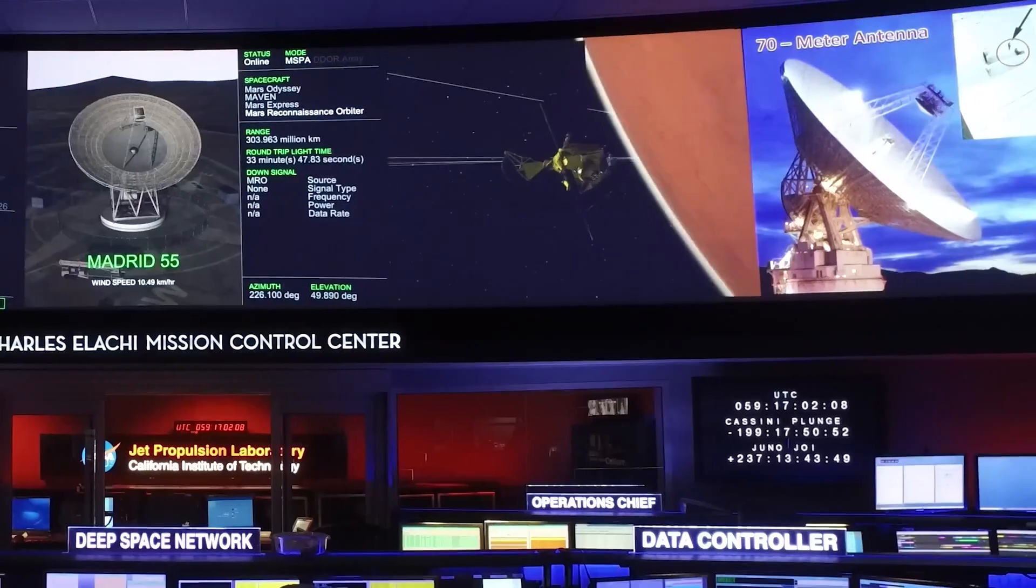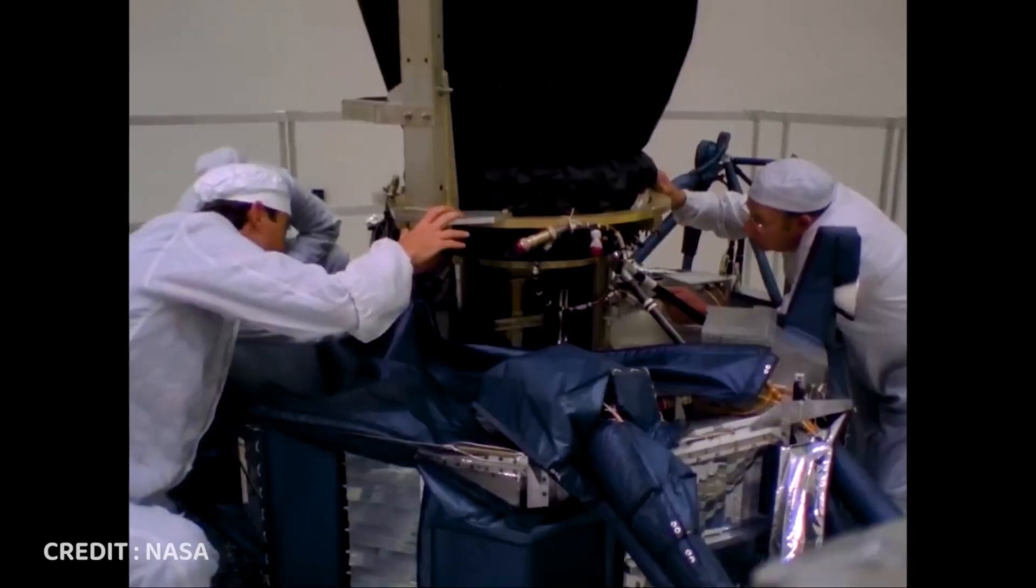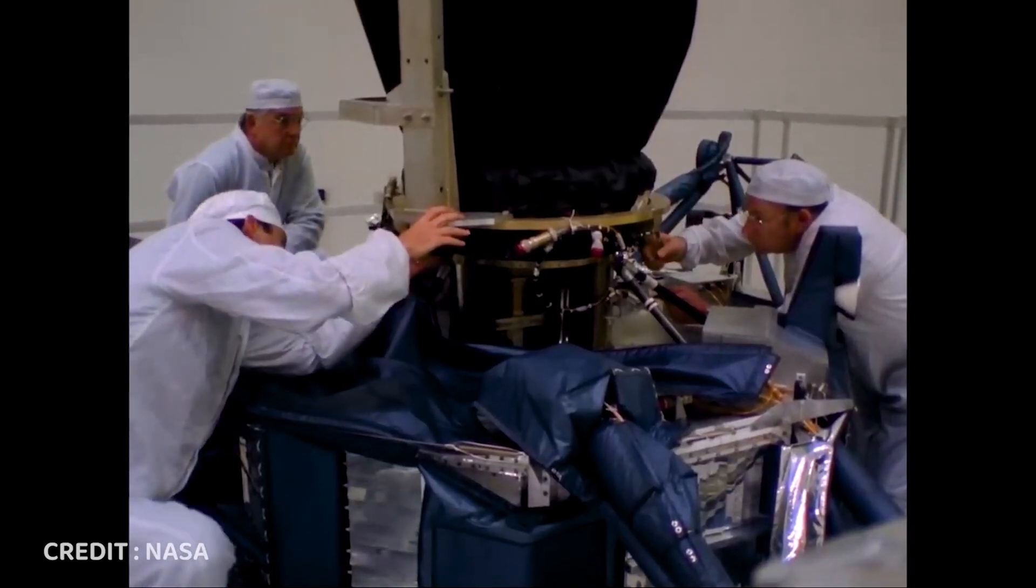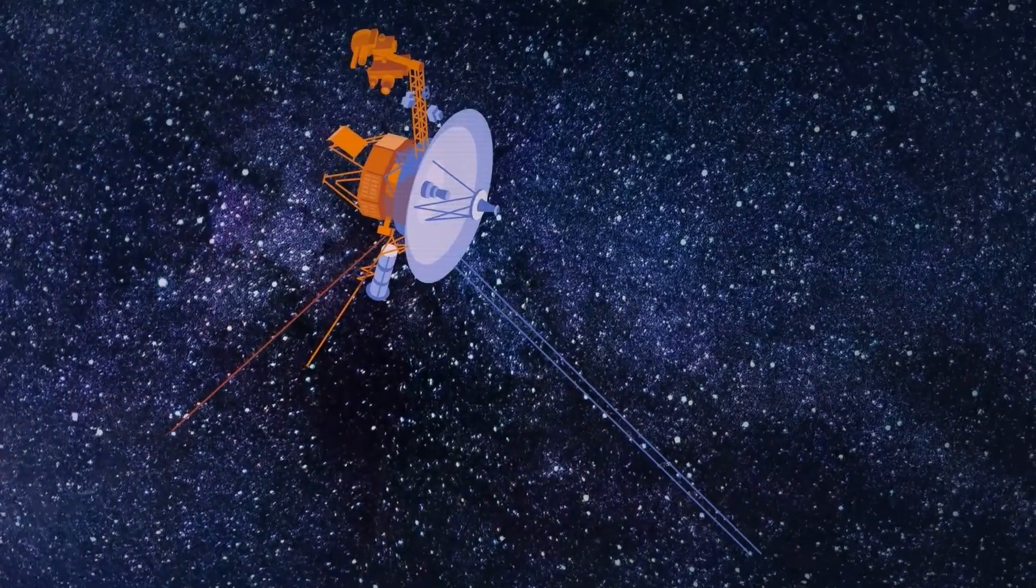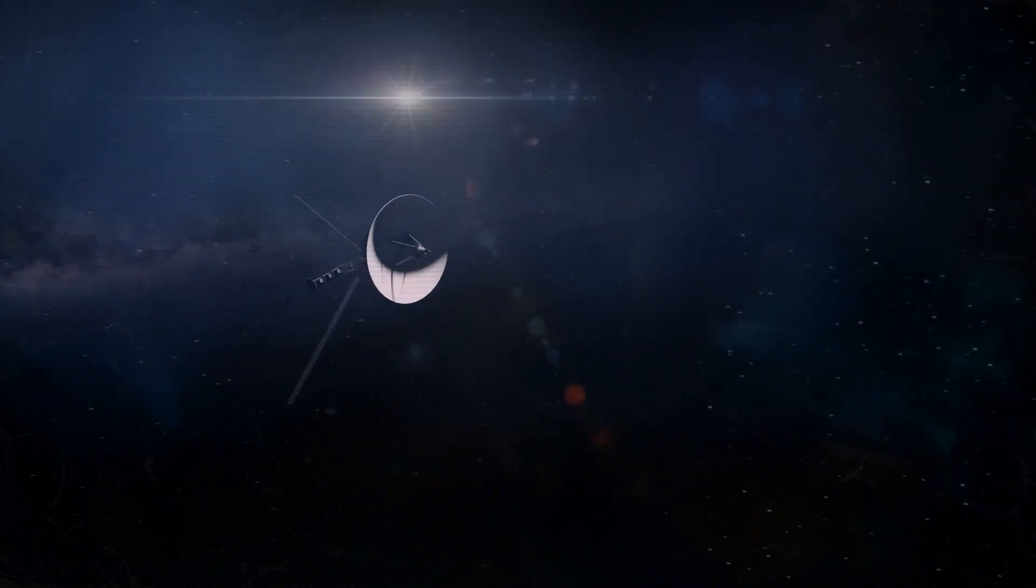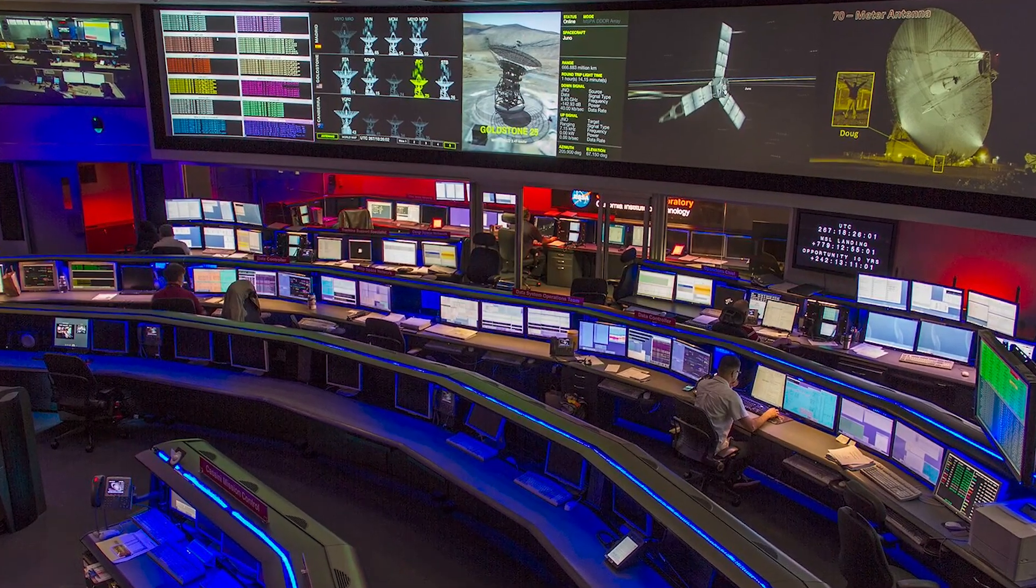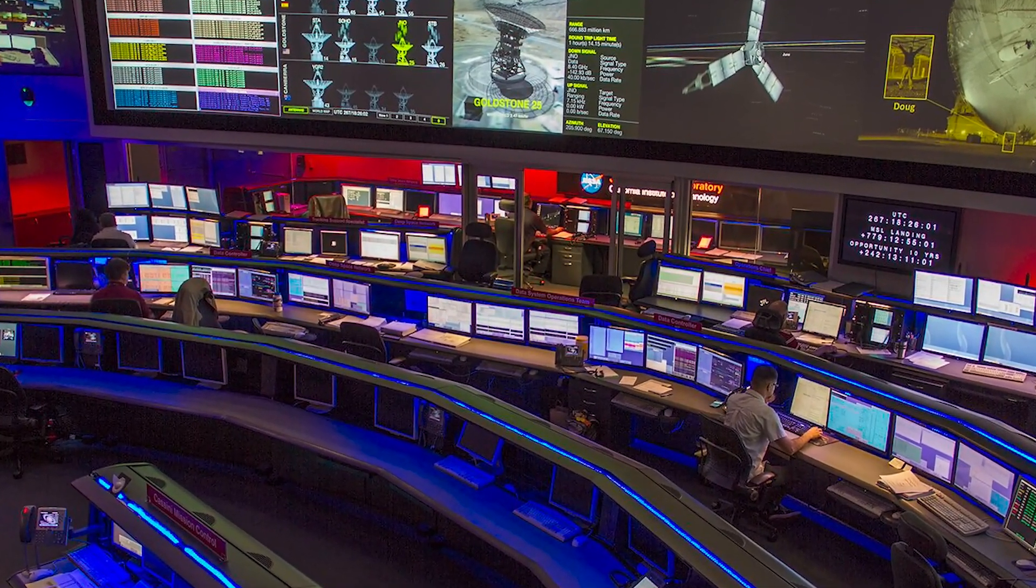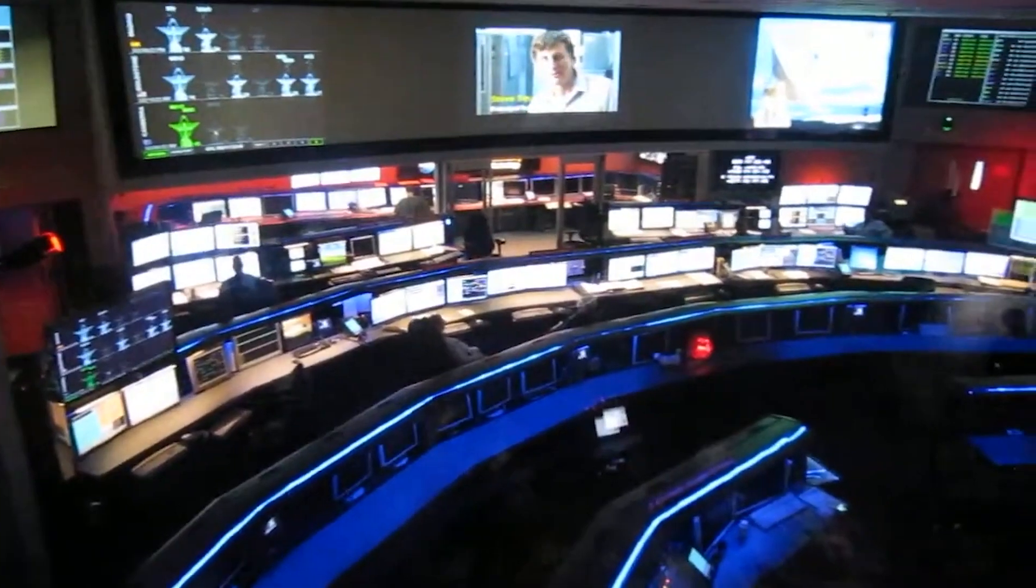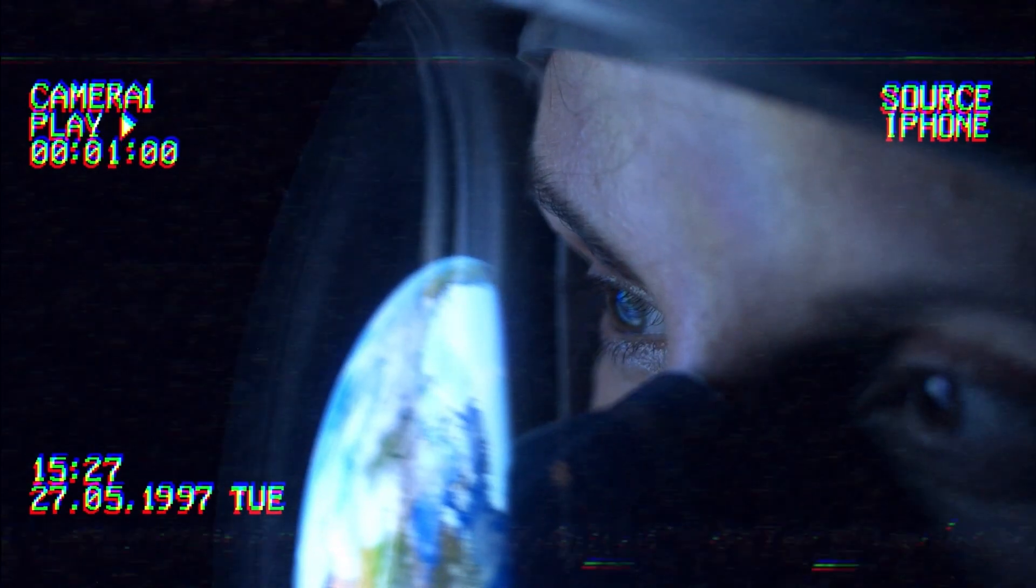The technical hurdles are immense. Voyager 1's systems are antiquated by modern standards, built with technology dating back to the 1970s. Making adjustments or updates to the spacecraft's software from such a vast distance, with commands taking over 17 hours to reach Voyager and another 17 hours for a response, demands not only technical expertise but also remarkable patience. The team managing the mission must meticulously formulate every corrective command, fully cognizant that a misstep could further complicate matters or, at worst, terminate the mission altogether.